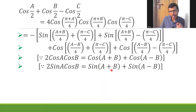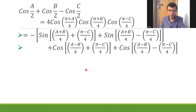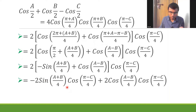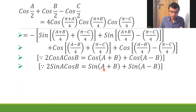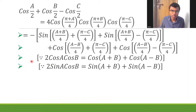In the first term, in place of A and B I have (a+b)/4 and (π-c)/4; in the second term, A and B are (a-b)/4 and (π-c)/4. Please don't forget to mention your reasons — they carry marks. The examiner will definitely look for them, especially since this is a long-answer question worth seven marks in Telangana board exams.